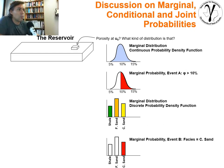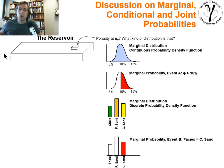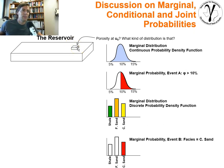Let's give ourselves a very simple example. We have a reservoir, and the reservoir is conveniently a box. As typical in a reservoir problem, we want to assess what the reservoir properties are at different locations within the reservoir away from where we've sampled. So we have uncertainty — there's going to be probability and distributions and so forth.